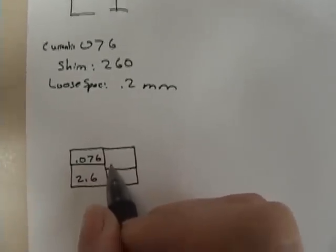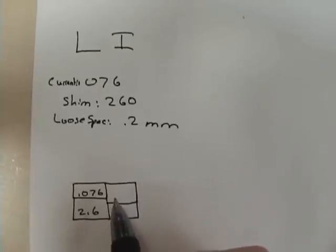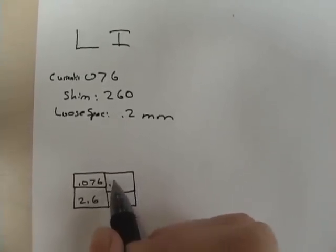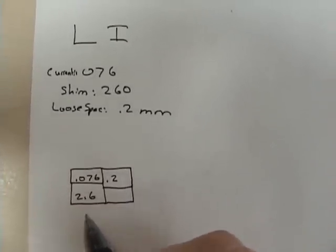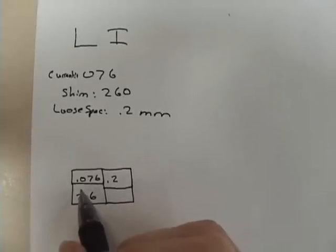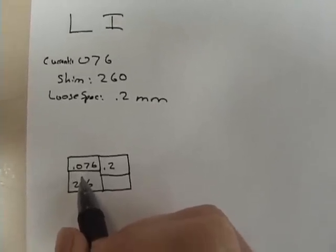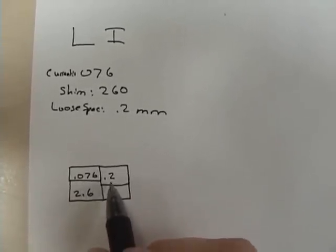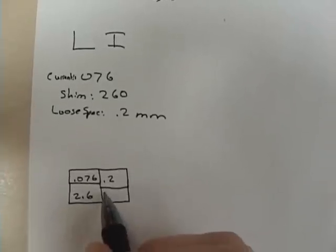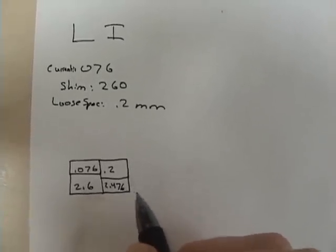When you want a bigger clearance, you've got to go with a smaller shim. And the clearance I want is .2, and so when you add up 2.6 and .076, and then subtract .2, you get 2.476.